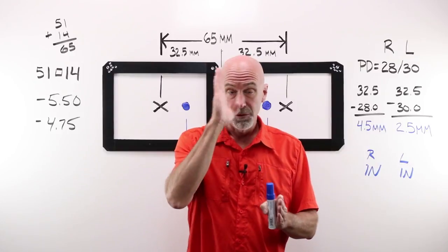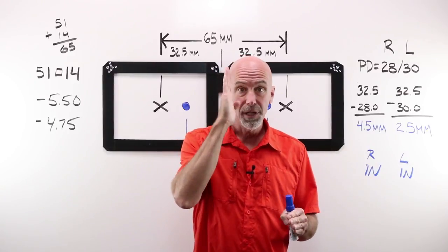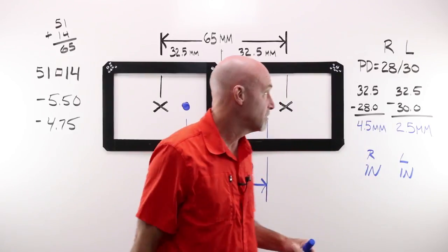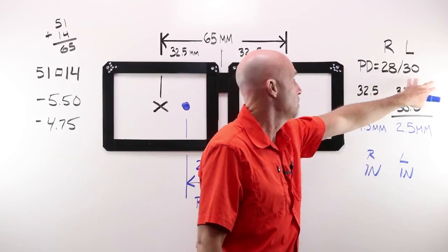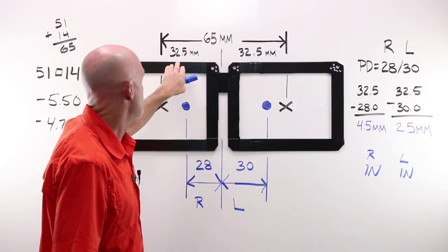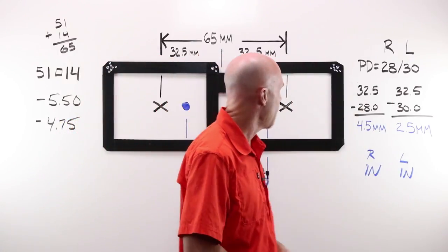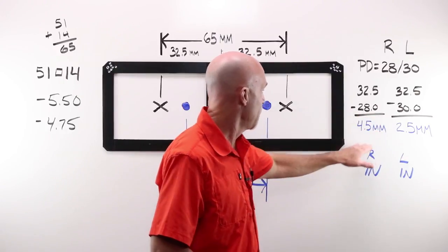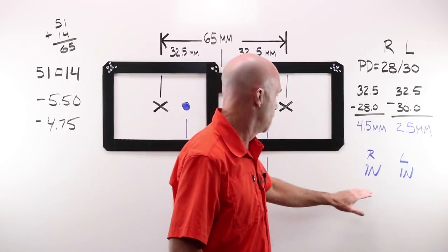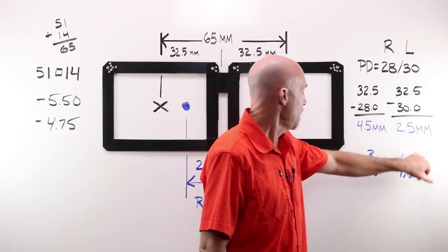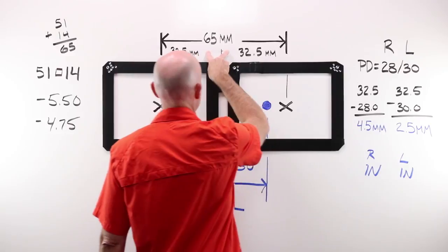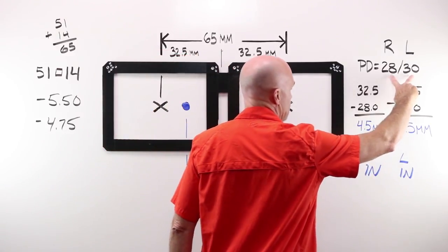I have been given a monocular PD of 28/30. Monocular meaning that this person, the right eye is not symmetrical. It has a different distance from the center of their nose to the center of their pupil than it does in their left eye. Because I have two numbers, 28 and 30, I need to split my frame. My 65 gets divided by two, which gives me 32 and a half and 32 and a half. Where did this come from? Splitting my frame. Where did these come from? My monocular PD.